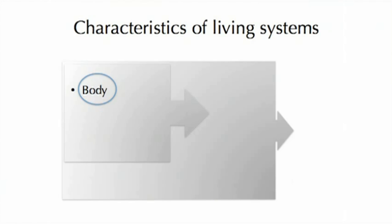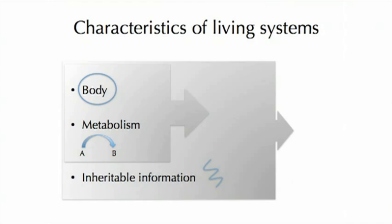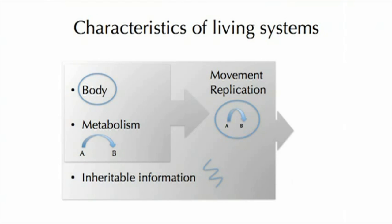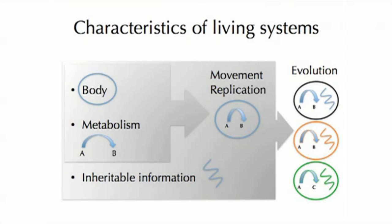So what are these characteristics? We consider first that life has a body — this is necessary to distinguish the self from the environment. Life also has a metabolism, a process by which life can convert resources from the environment into building blocks so it can maintain and build itself. Life also has inheritable information; we as humans store our information as DNA in our genomes and pass it on to our offspring. If we couple the body and metabolism, we can come up with a system that could move and replicate. Coupling those to inheritable information gives a system that is more lifelike and could evolve. These are the things we have tried to do in the lab.